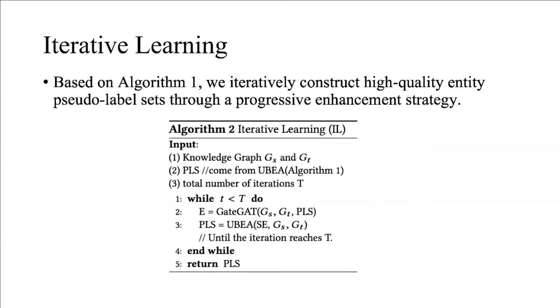This is a gradual enhancement strategy proposed to iteratively build the entity pseudo-label set and learn the knowledge graph representation. The goal is to optimize the pseudo-labels and improve the mapping between the two states. In Algorithm 2, the pseudo-label set and knowledge representation of entities are optimized through iteration T times. In the iteration process, updating the pseudo-label set from the newly trained model. Every iteration will be updated.